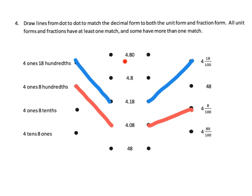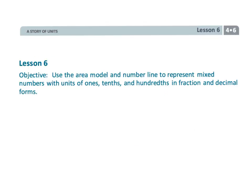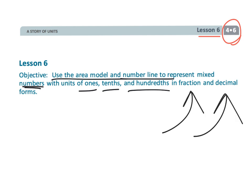We're seeing connections across all these forms. I can envision a card game where students make cards in unit form, decimal form, and fraction form — maybe even with a number line or area model — and try to create matching sets of three or four cards depending on the representations used. That wraps up fourth grade module six lesson six, where students use the area model and number line to represent mixed numbers using ones, tenths, and hundredths with fractions and decimals.